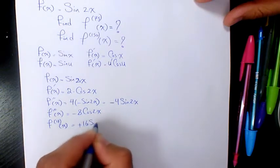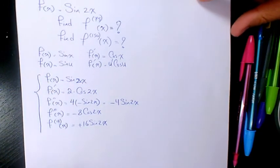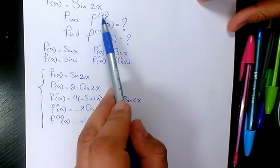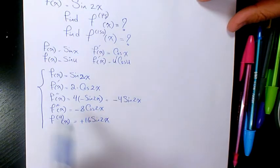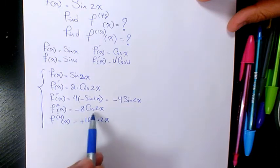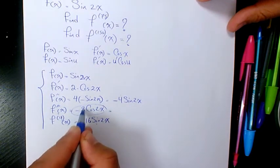So now when we are talking about 75th derivative, 75 is a multiple of 3, 76 is a multiple of 4. So it's going to be basically like this: here we have negative 8, which is negative 2 to the power of 3 cosine 2x.